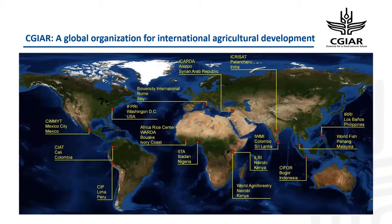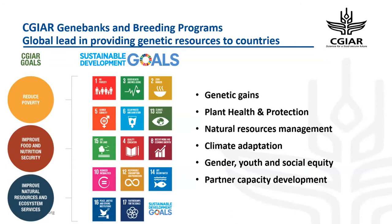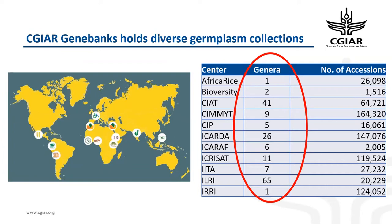For those new to the CGIAR system: CGIAR is a global agriculture organization with 15 centers spread across the world. Eleven of these centers focus on crop improvement programs with gene banks and breeding programs focused on important food staples. The major goal of CGIAR is to enhance genetic gains, protect plants and the environment, contribute to climate adaptation, create opportunities for gender, youth, and social equity, and improve partner capacity. Ultimately, all these address UN Sustainable Development Goals. CGIAR also hosts gene banks with the largest collection exceeding 750,000 accessions, corresponding to over 200 genera.